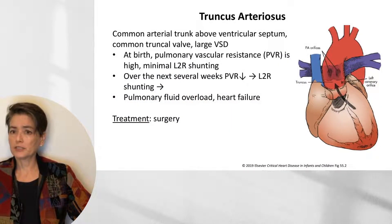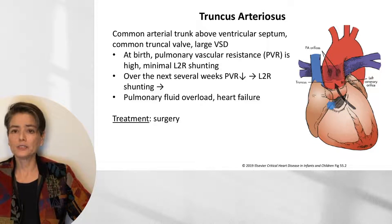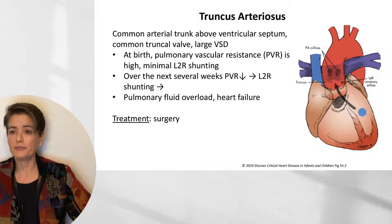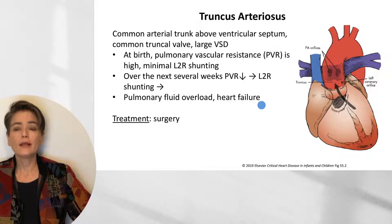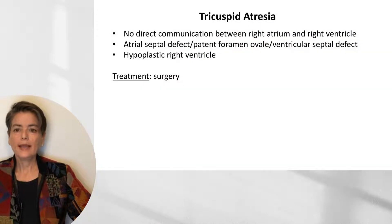The next entity is truncus arteriosus, in which there is a common arterial trunk above the ventricular septum with a common truncal valve and a large ventricular septal defect. At birth, pulmonary vascular resistance is high, minimizing left-to-right shunting, so we have cyanosis. Over the next several weeks, as pulmonary vascular resistance decreases, the shunt shifts from right-to-left to left-to-right, leading to pulmonary fluid overload and heart failure — covered in the left-to-right defect lecture. Treatment is surgery.